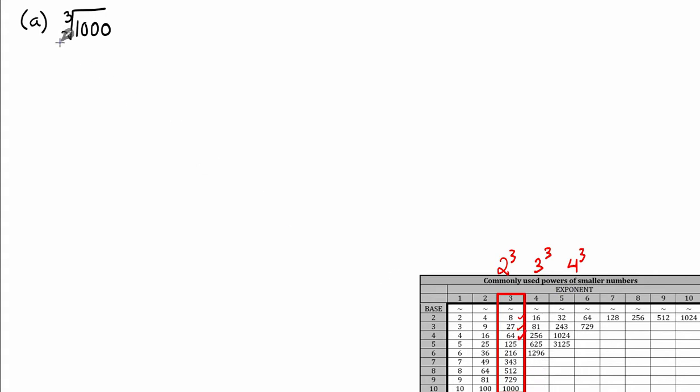You get the idea. So if you have this table to consult, you just look among the perfect cubic numbers and you see if in fact 1000 is one of them. And in fact it is, since 1000 is 10 cubed, the cube root of 1000 is 10. Pretty simple.